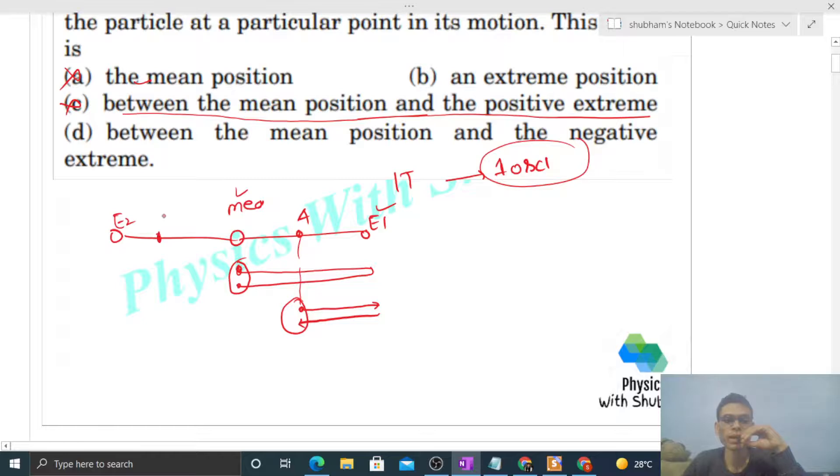Between the mean position and the negative extreme, if you take any point B, then when the particle is there, how will it move? It will go to mean position. Let me write it here. B went to the extreme, then came back through mean position to B. Still one oscillation is not complete. So this is also not correct.